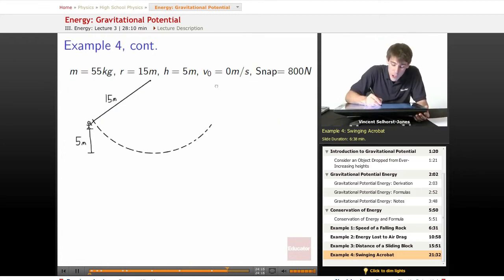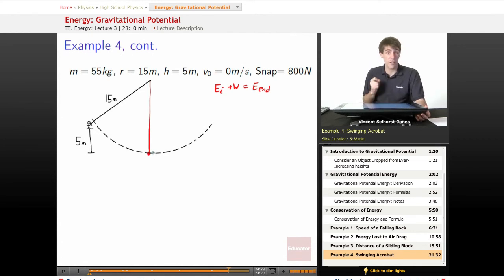We know that the energy initial plus the work equals the energy at the end. The moment we want to look at is going to be the moment of most tension. That's the point we want to check at and figure out if he's going to survive. We're going to make that ending snapshot be when it's pointing directly down. Is there any work that occurs? No, there's no friction. Nothing happens. It's just a clean, smooth pivot.